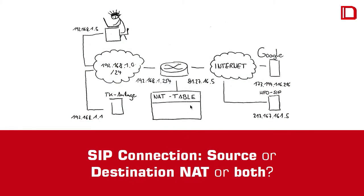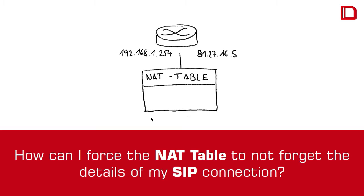But normally, what I want to say is you just don't need destination NAT. Use source NAT. Make a register to the provider. And the trick is to keep the NAT open - to not let the entries in your NAT table die. Keep them open. So if I ensure that the NAT table knows the connection between my PBX and the SIP provider, then I don't need a destination NAT. Because even if I get an inbound call in 10 minutes and the information is still stored in the NAT table, it just knows what to do. You have to enforce that the NAT table does not forget the details of your SIP connection.